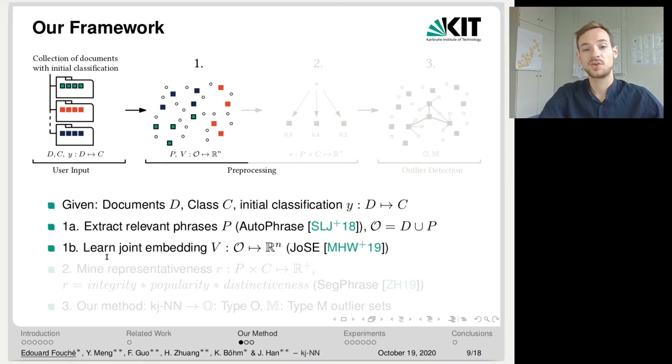Then we learn a joint embedding, so a mapping of each text to a high dimensional space. And here we use an approach known as joint spherical embedding. The advantage of this approach is that it is very efficient and also that in the end, we have a mapping of all text objects to a common space. And so in this space, we can measure the similarity between document to document and between document to phrases.